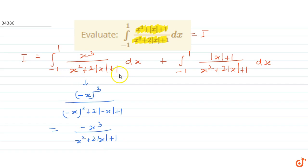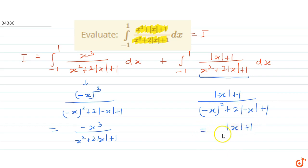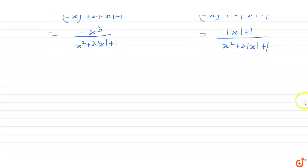So this first part is an odd function. For the second part, if we substitute x by -x, we get |(-x)| + 1 divided by (-x)² + 2|(-x)| + 1, which equals |x| + 1 divided by x² + 2|x| + 1. So for the second part, this function is an even function.